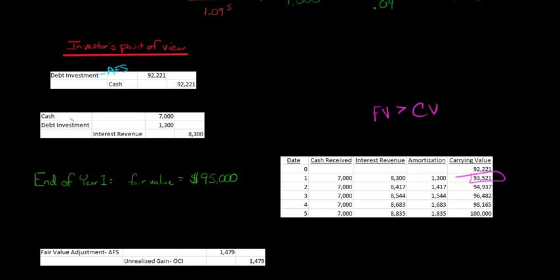You would think you would just debit debt investment directly and increase the asset account directly, then credit OCI, but it doesn't work like that. We create this account called fair value adjustment. I know it just adds complexity, I apologize. Fair value adjustment - available-for-sale securities.